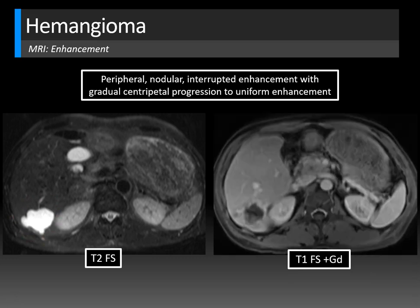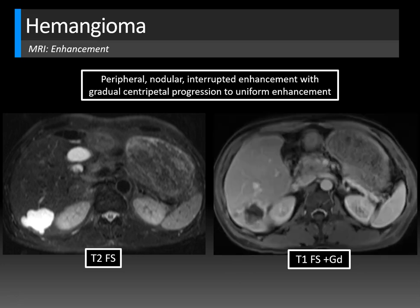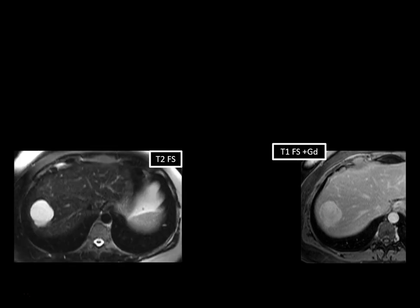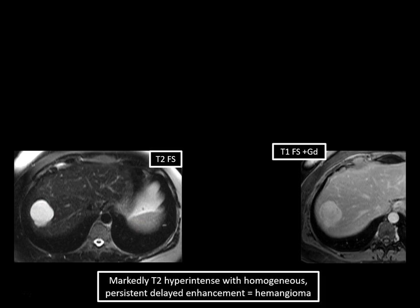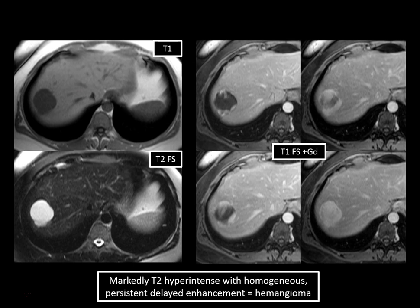Here's another example showing markedly T2 hyperintense hemangioma relative to the spleen, demonstrating gradual centripetal peripheral nodular interrupted enhancement — a puddling that continues to fill in. On the delayed phase MRI at five-minute delay, a homogeneously enhancing mass in the right lobe is visible. Combining markedly T2 hyperintense with persistent delayed enhancement is very likely a hemangioma. The T1 image confirms hypointensity isointense to the blood pool, and earlier phases show peripheral nodular enhancement with gradual centripetal progression.